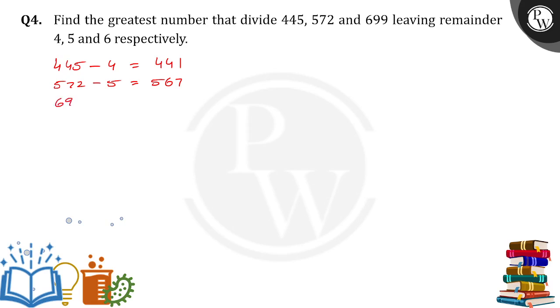Next, 699 minus 6 is equal to 693. So these are the three numbers which are divided exactly, right? So we can do prime factorization for 441. If we do prime factorization for 441, it is 21 squared, which is 441, right?